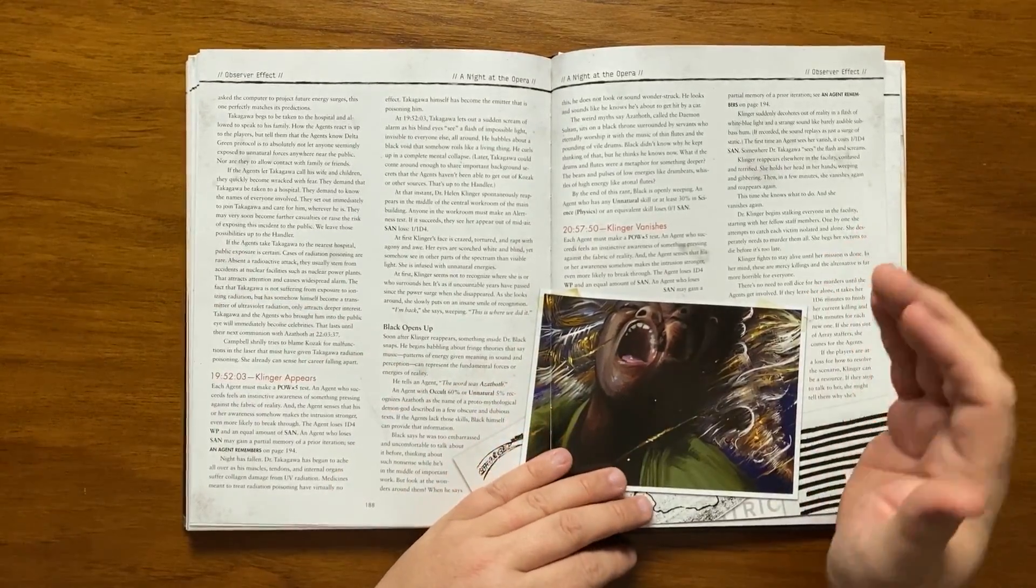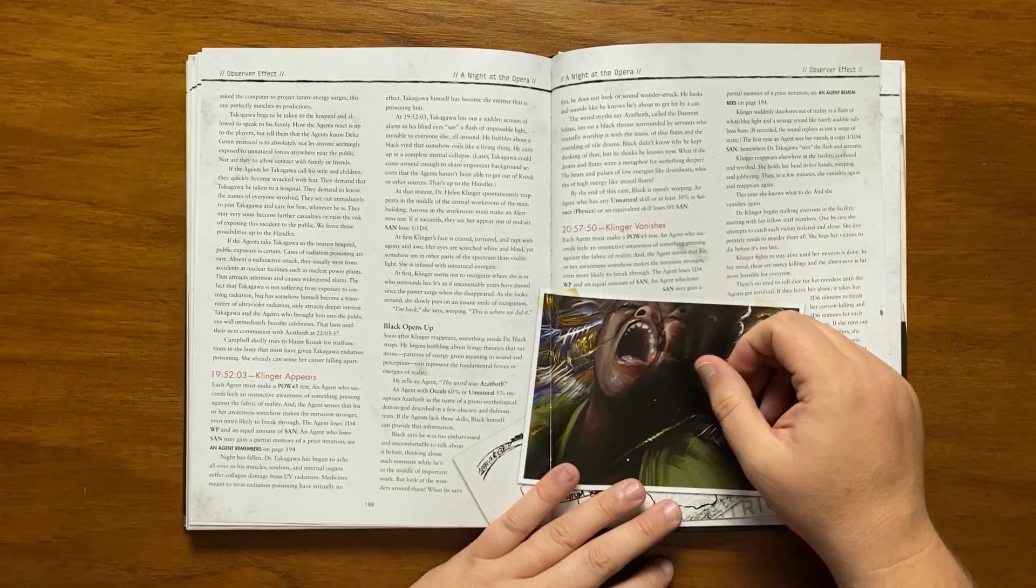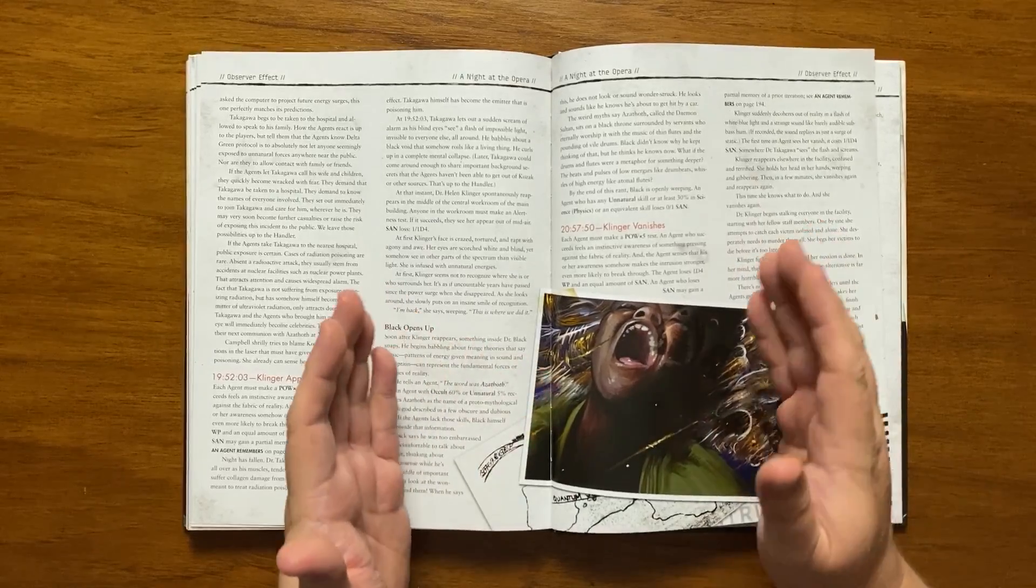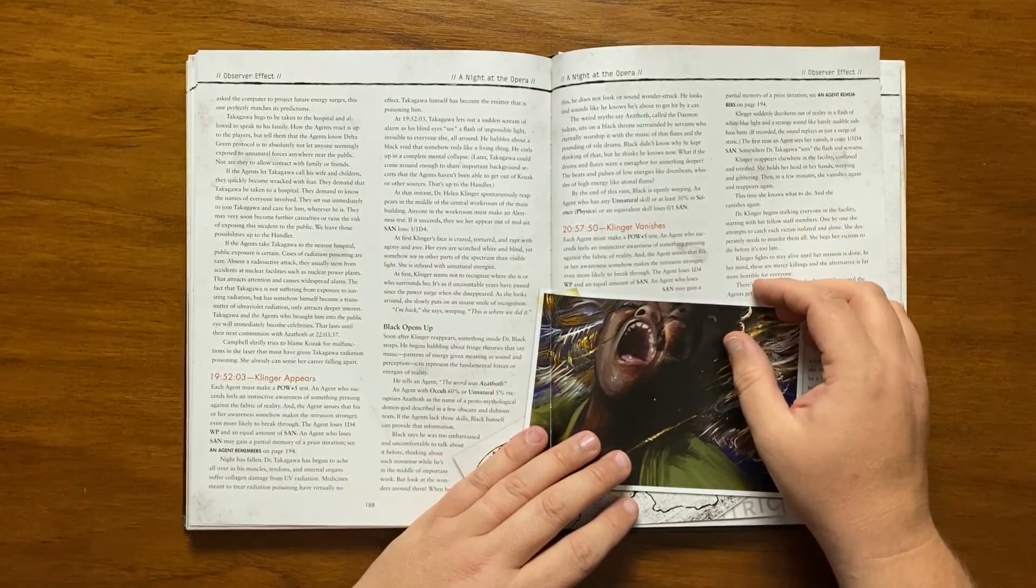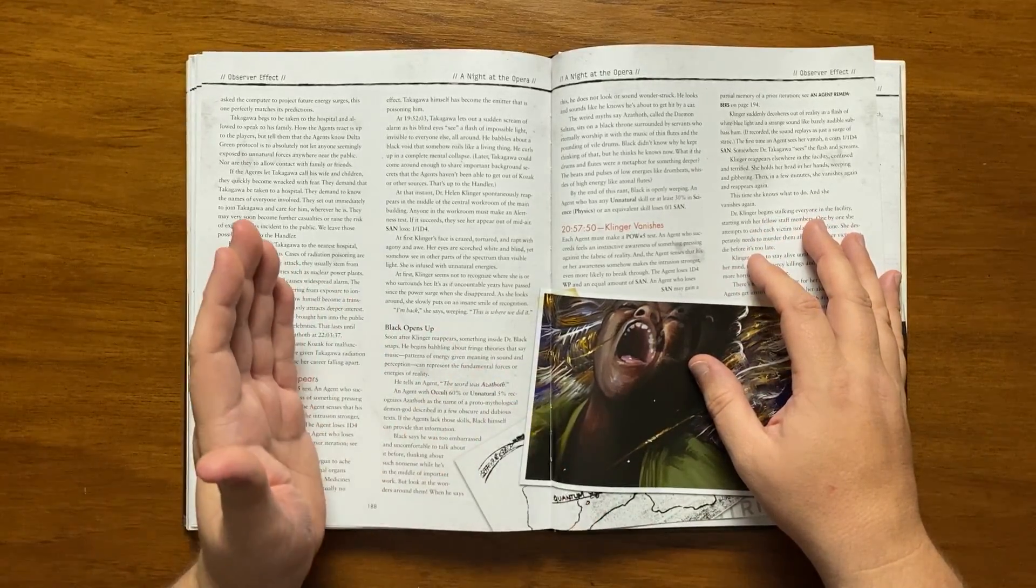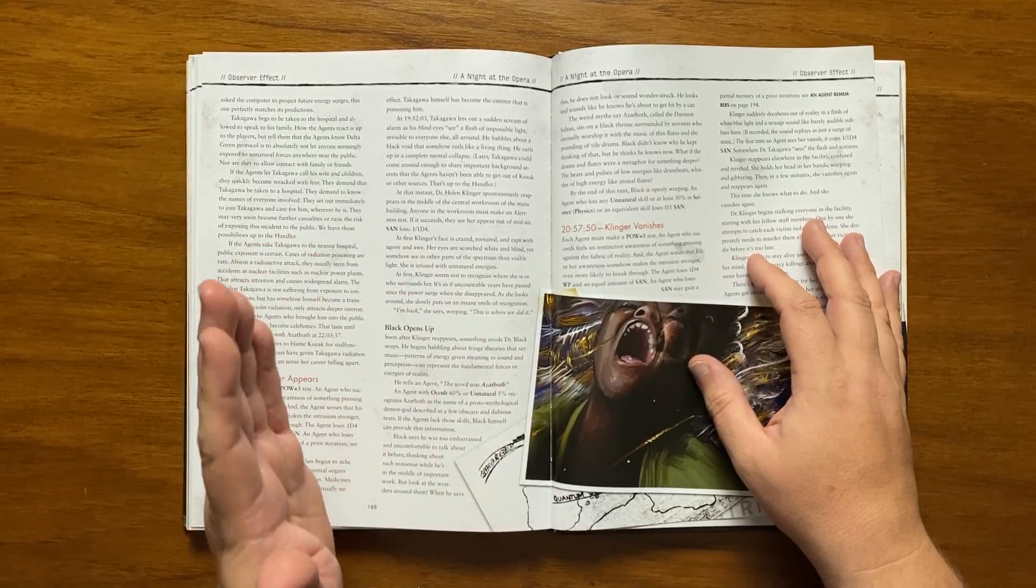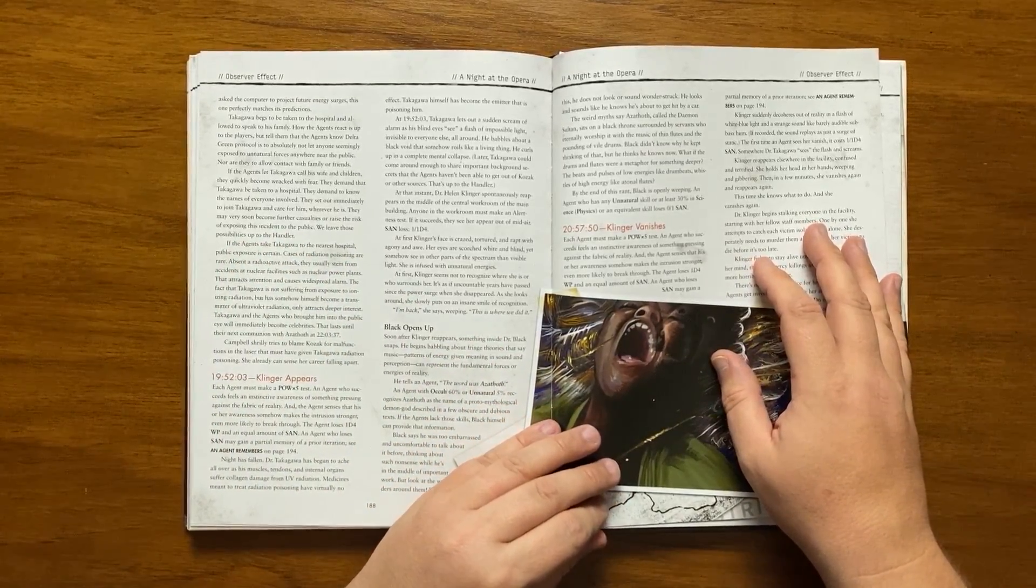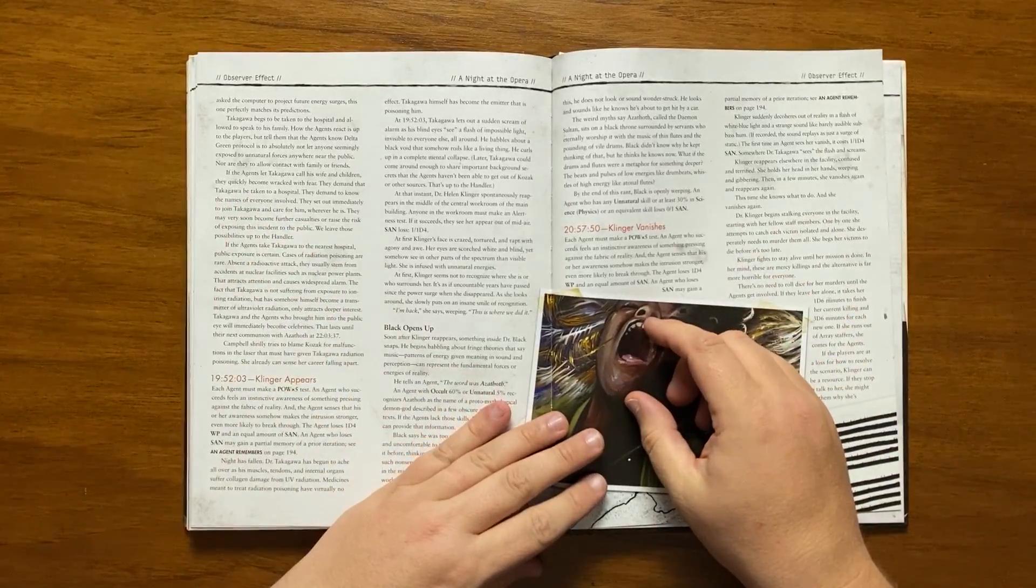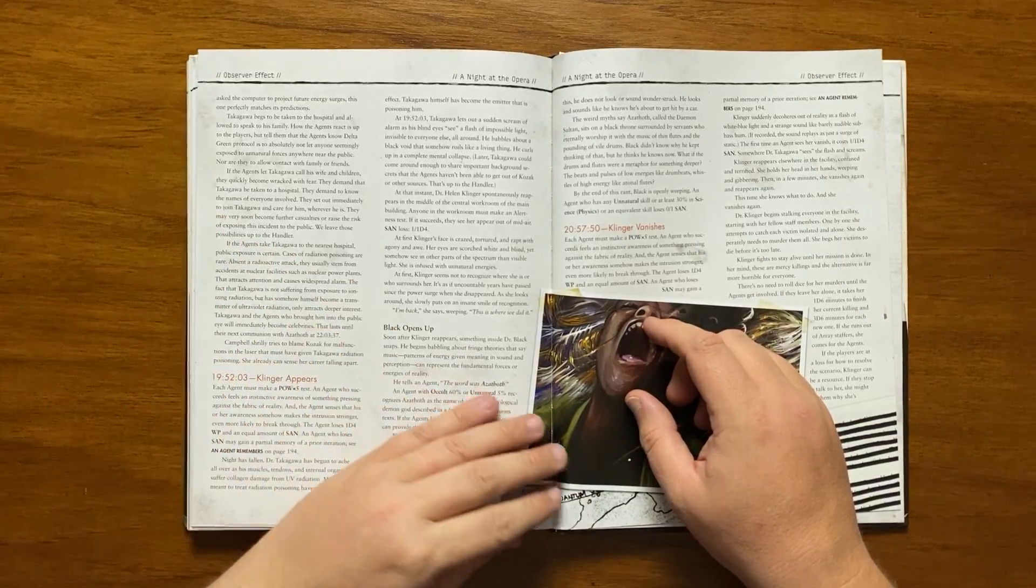At 1952 Klinger appears. Again a power times fire roll needs to be made and an awareness of something pressing against reality can be felt and they can again gain a partial memory of a previous iteration. At this point Takagawa is suffering UV damage and has become an emitter that is poisoning him. He will let out a sudden scream as his blind eyes see a flash of impossible light and he babbles about a black void that moves like a living thing then mentally collapses. Dr Klinger will then spontaneously reappear in the middle of the central work room. Her face is tortured with agony, madness and awe. Her eyes are scorched and she is infused with her natural energies. Initially she forgets where she is and then says menacingly, I'm back, this is where we did it.